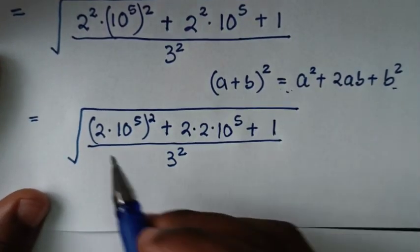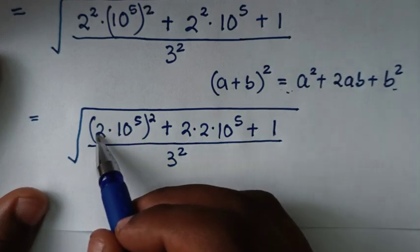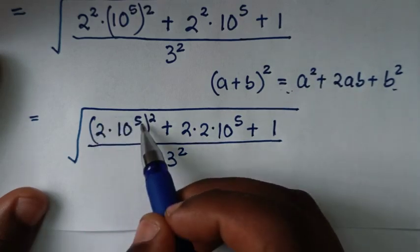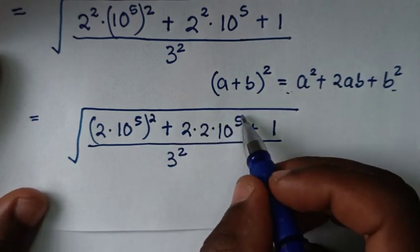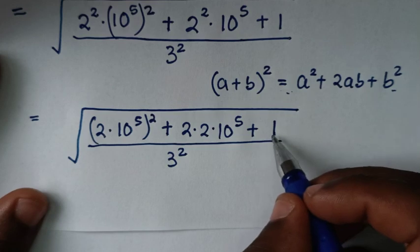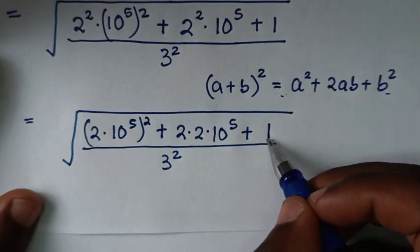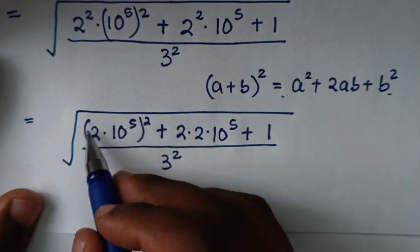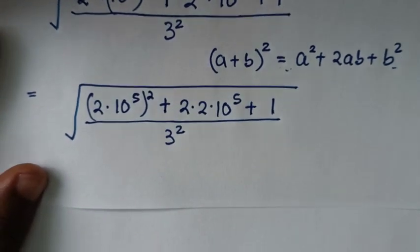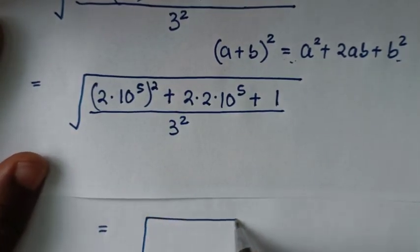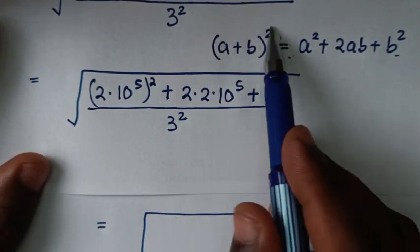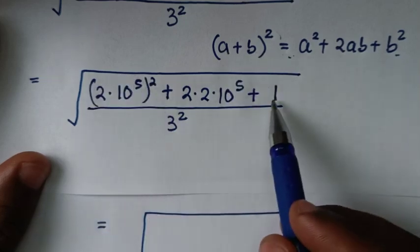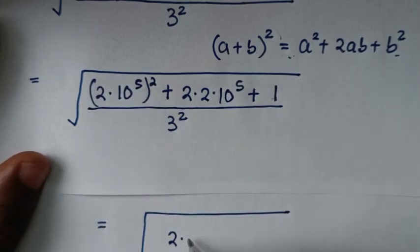Comparing, we identify: a squared is (2 times 10 to the power 5) squared, so a equals 2 times 10 to the power 5. The middle term 2ab equals 2 times 2 times 10 to the power 5, which means b equals 1, so b squared is 1 squared which is still 1. Therefore the expression inside is (2 times 10 to the power 5 plus 1) squared.